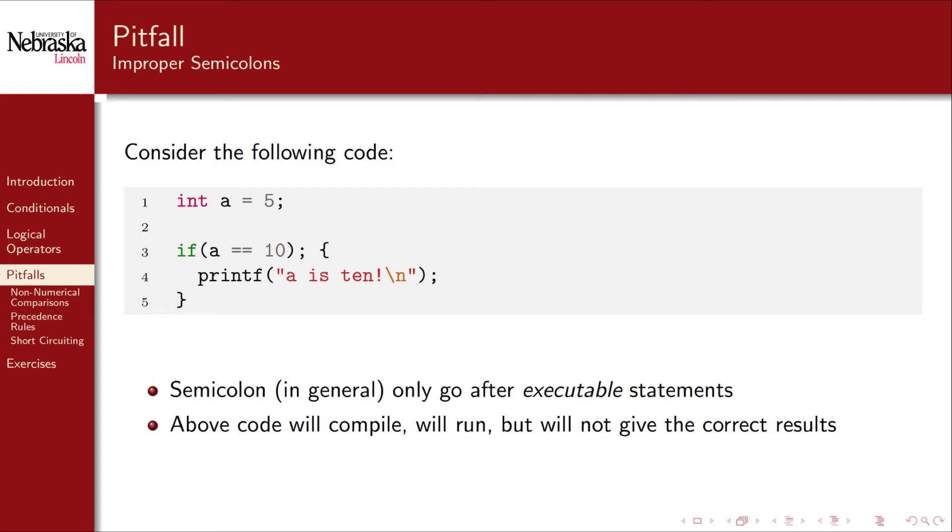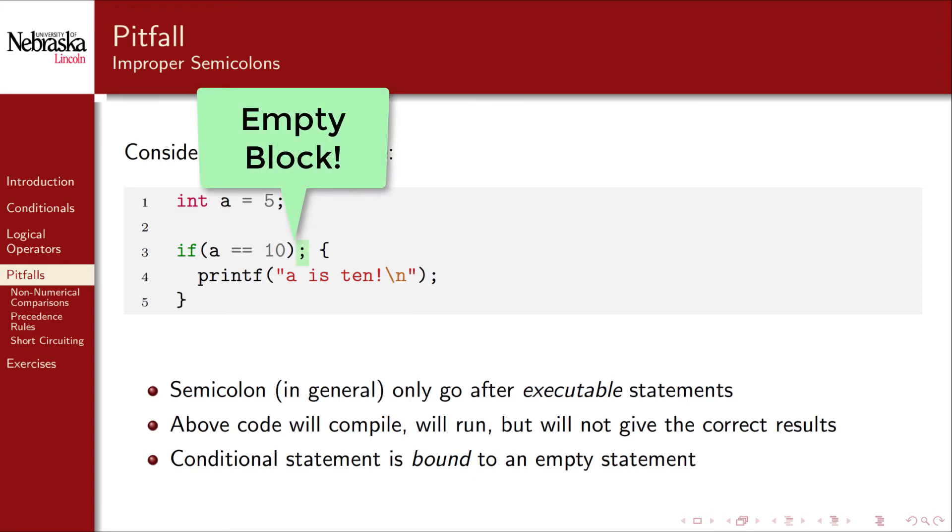Again this example code will compile and run but it will give incorrect results. A conditional statement is bound to the next block of code. In this case the next block of code is empty as denoted by the erroneous semicolon. The result is that the print statement will execute regardless of the value of A. Again a linter would easily find such a mistake.